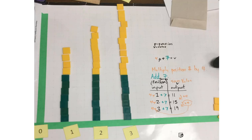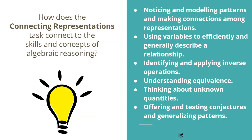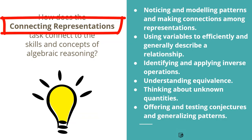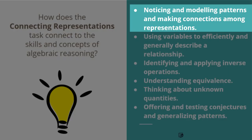Here is what some others did. We can see every time we're talking about a constant, we see green. Every time we're talking about the multiplier, we see yellow. Pause the video and have a look at all of those connections. We want to think about this one last time: how are the skills and concepts of algebraic reasoning coming out while we connect the representations? We are making connections among representations, and we're really noticing and modeling those patterns and understanding them more deeply when we're able to do that. Thanks so much for listening.